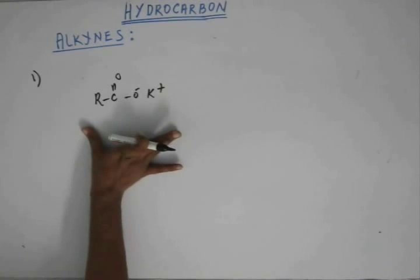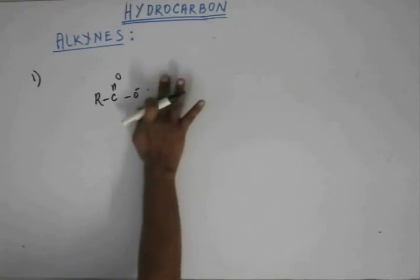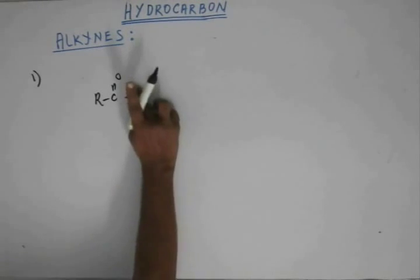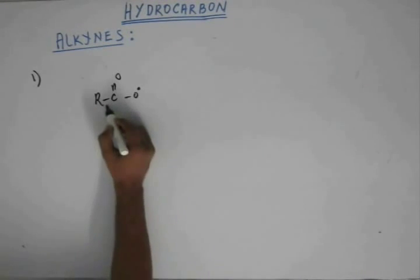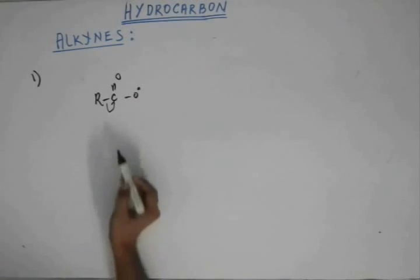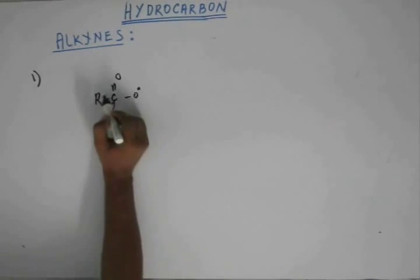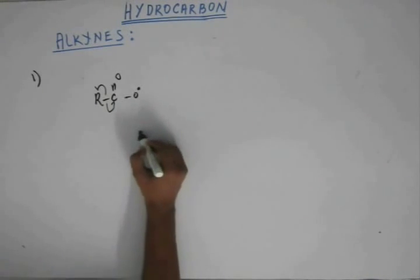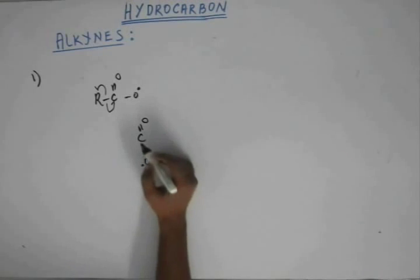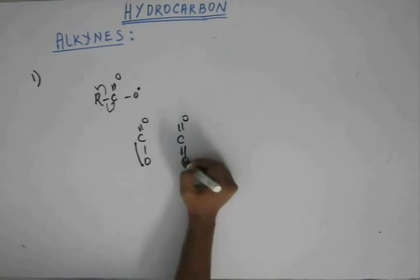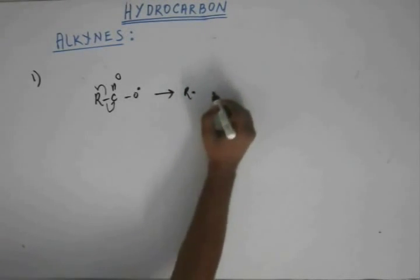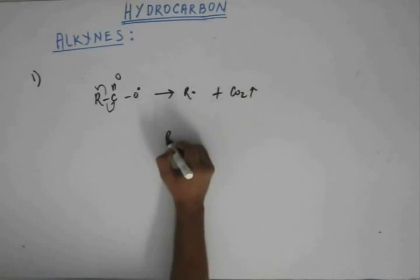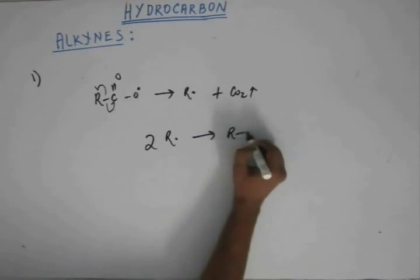This is Kolbe's electrolysis substrate. When you take this and pass electricity through this, the first step of the reaction is oxidation. This oxygen loses the electron, forms a free radical and then this carbon gains one electron and that's why I have shown it with single headed arrow and one electron goes to R. When that happens, there is one electron on oxygen and one electron is gained by carbon, they form a double bond. That means they form CO2 gas. CO2 gas comes out and alkyl free radical is formed. And these two alkyl free radicals dimerize to give us R-R.